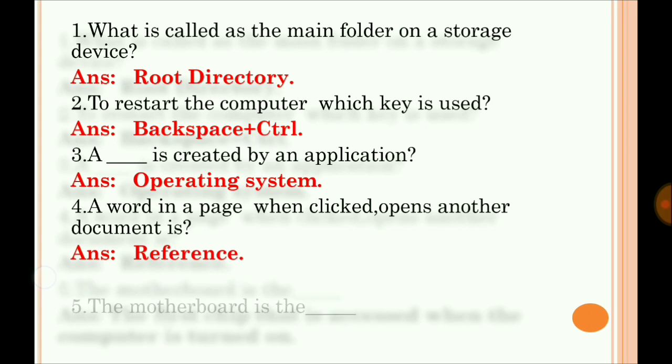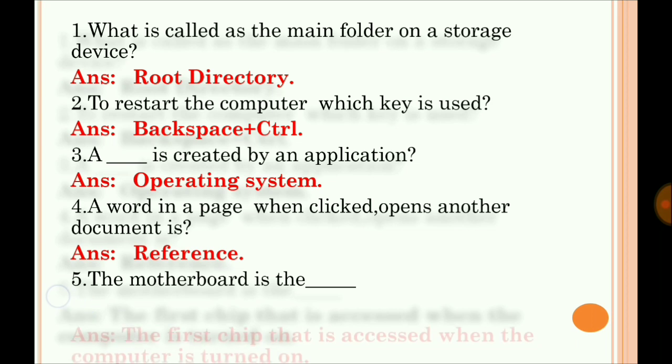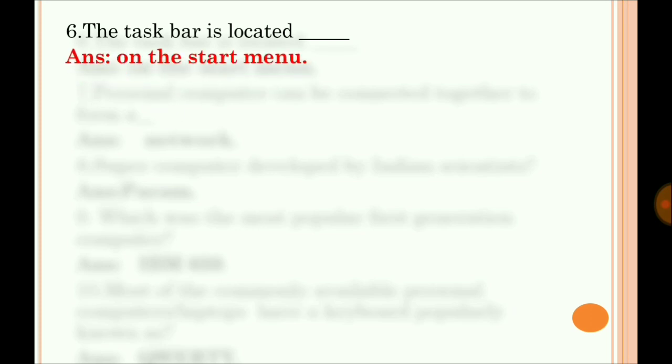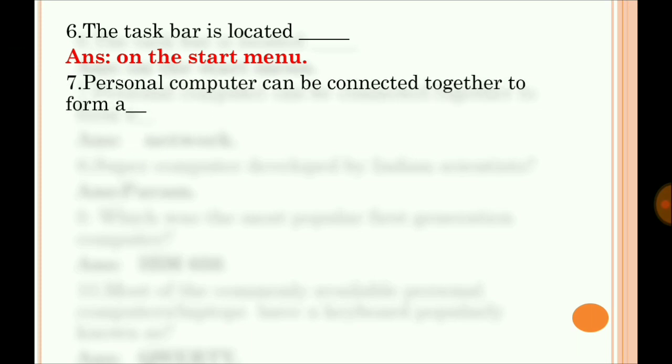Number five: The motherboard is the first chip that is accessed when the computer is turned on. Number six: The taskbar is located on the start menu. Number seven: Personal computers can be connected together to form a network.